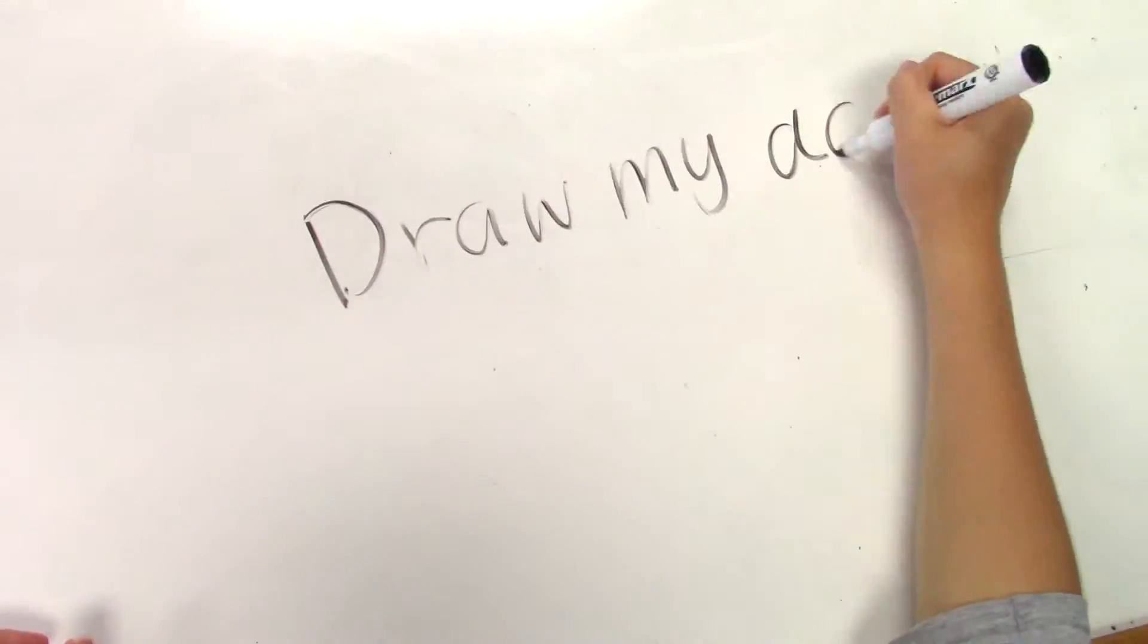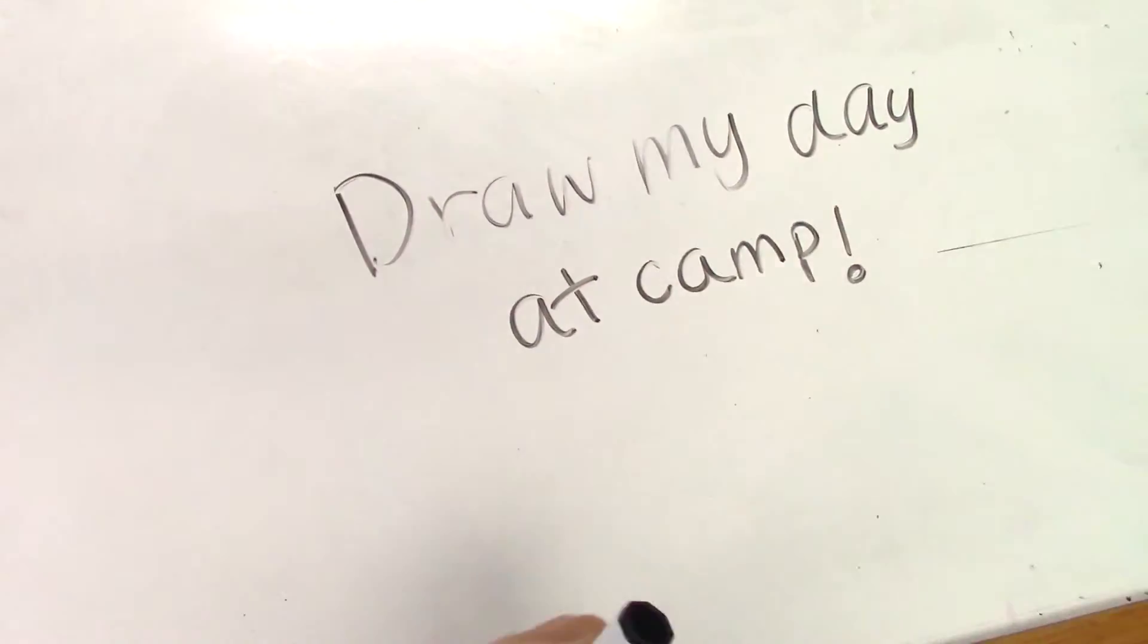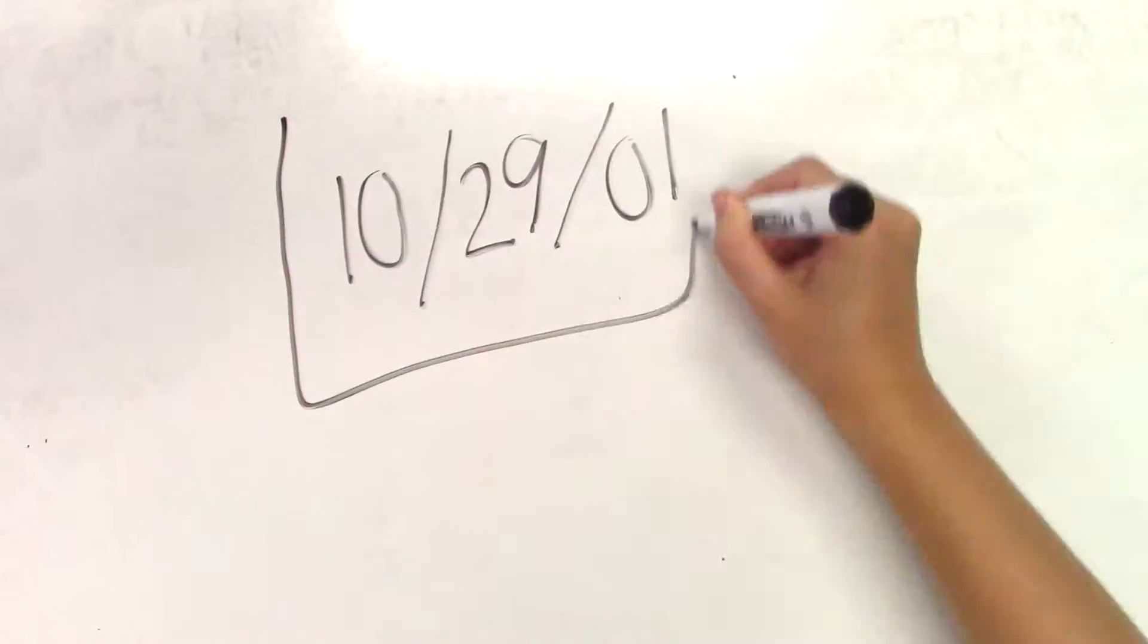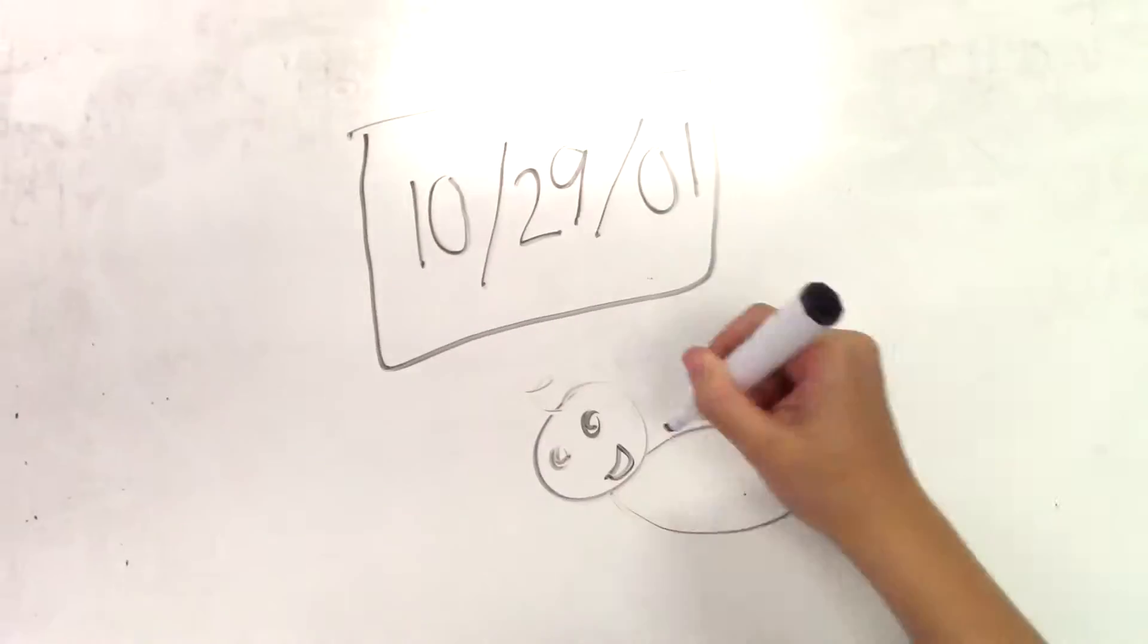Hi, I'm Emma and this is my Draw My Day for July 1st. I was born October 29, 2001. I'm now 13 years old.